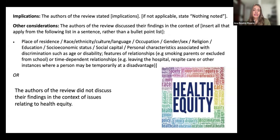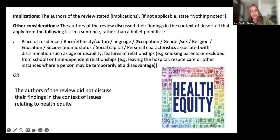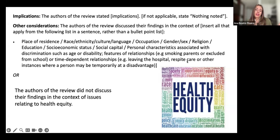Next, we use the PROGRESS-Plus framework: place of residence, race, ethnicity, culture and language, occupation, gender, sex and religion, education, socioeconomic status, social capital, personal characteristics associated with discrimination, or time-dependent relationships. If the authors didn't discuss any of these, we just state that they did not discuss their findings in this context. Sometimes they don't, but mostly they do.